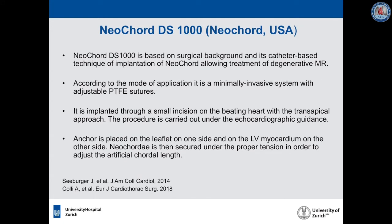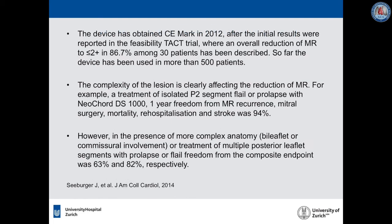The NeoChord DS1000 is based on surgical background and its catheter-based technique allows implantation of neocords for treatment of degenerative MR. It is a minimally invasive system with adjustable PTFE sutures, implanted through a small incision on the beating heart via transapical approach under echocardiographic guidance. An anchor is placed on the leaflet on one side and on the left ventricular myocardium on the other, and the neocord is secured under proper tension. The device obtained CE mark in 2012 after the feasibility trial showed MR reduction to ≤2+ in 86.7% among 30 patients.